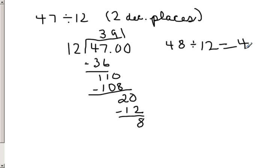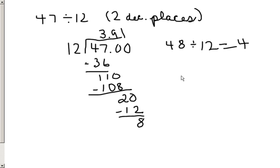Now, looking at my estimate — 48 divided by 12 is 4 — I know my decimal point is going to go right there: 3 and 91 hundredths. I could also round this to 3 and 92 hundredths because this remainder is more than half of 12. So dividing with a quotient to one or two decimal places is very customary. That's our review of dividing whole numbers and decimals.